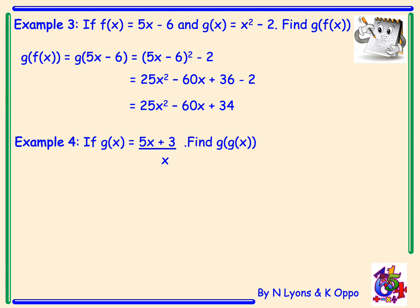Example 4. This example is of exam standard. If g of x equals 5x plus 3 all over x, we need to find g of g of x. So we're putting the g function back into the g function. So again, we start by putting 5x plus 3 over x in a bracket. Where you see an x, we need to replace that with 5x plus 3 over x. This will give us 5 times 5x plus 3 over x, add 3 on our numerator. And on our denominator, we'll have 5x plus 3 over x.